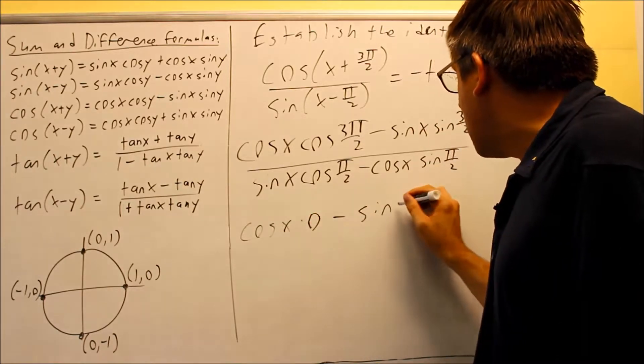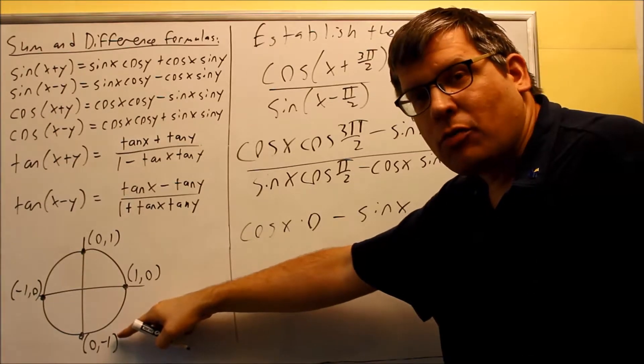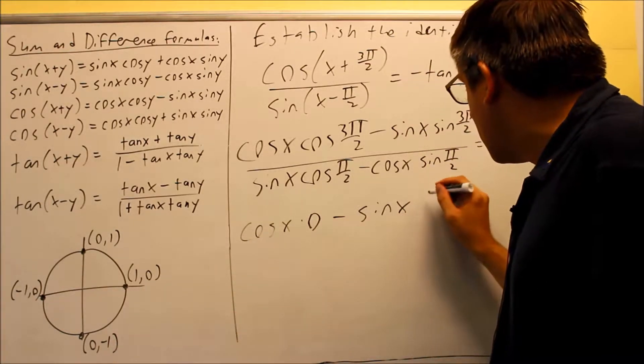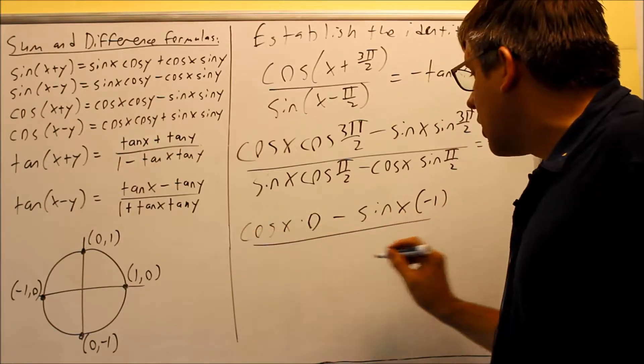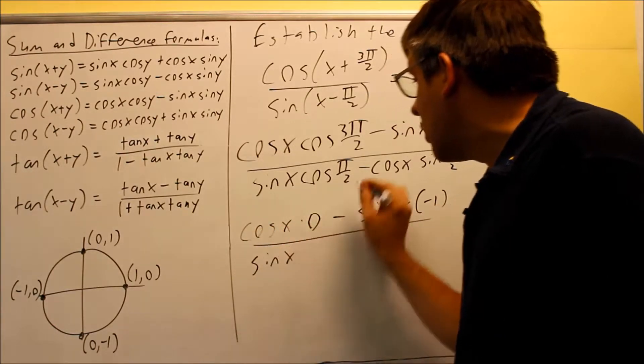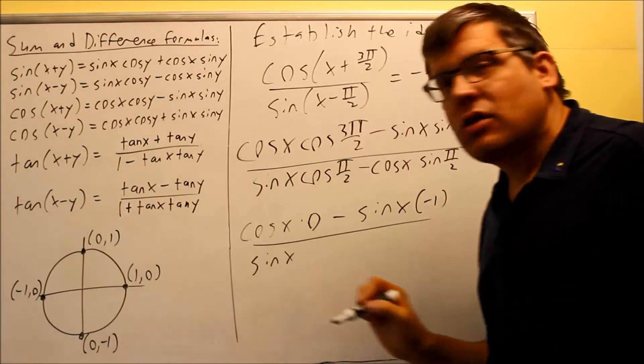Next, we have a minus sine x and then sine 3π over 2. That's the y value from 3π over 2. That's negative 1. So then I'll put times negative 1. Down below here, I'm going to put in exact values for π over 2. Now π over 2, that's this point on the unit circle. That's at 90 degrees.